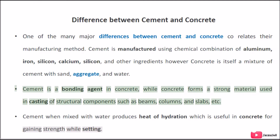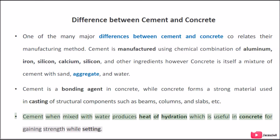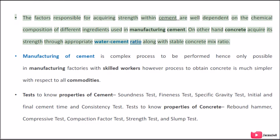Cement is a bonding agent in concrete, while concrete forms a strong material used in casting of structural components such as beams, columns, and slabs. Cement when mixed with water produces heat of hydration which is useful in concrete. The factors responsible for acquiring strength within cement are well dependent on the chemical composition of different ingredients used in manufacturing cement. On the other hand, concrete acquires its strength through appropriate water-cement ratio along with stable concrete-mix ratio.